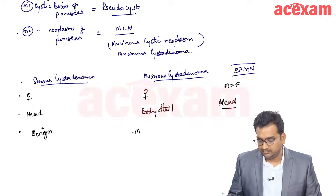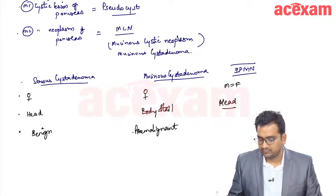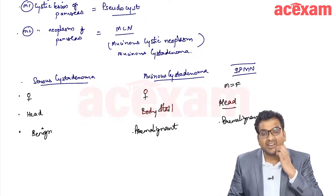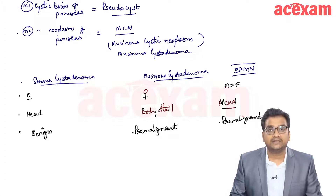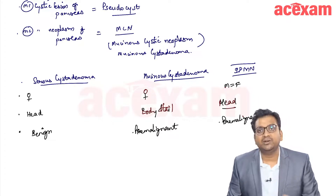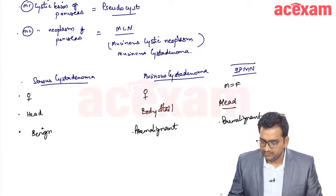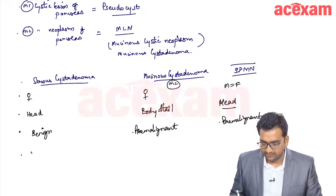Serous cyst adenoma is benign. Mucinous cyst adenoma is pre-malignant and IPMN is also pre-malignant. That is why for mucinous cyst adenoma as well as IPMN we will have to go for surgery. In serous cyst adenoma, if it is asymptomatic and small in size, we can wait. Mucinous cyst adenoma is the most common cystic neoplasm.